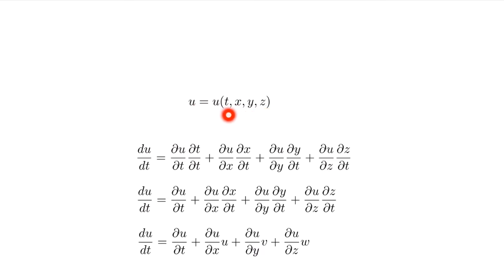In fluid mechanics, we have a quantity — let's say it's the u component of our velocity — and it can be a function of three spatial dimensions x, y, and z, and of course a function of time. If I want to take the total derivative du/dt of this quantity, I have to consider all of these variables. Using the chain rule of calculus, the derivative of u with respect to t is the partial derivative of u with respect to t, plus the partial of u with respect to x times dx/dt, plus the partial of u with respect to y times dy/dt, plus the partial of u with respect to z times dz/dt.